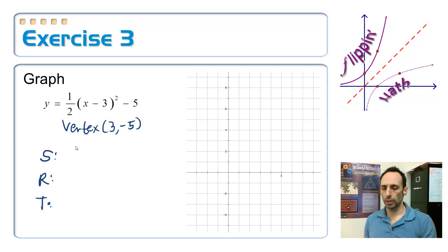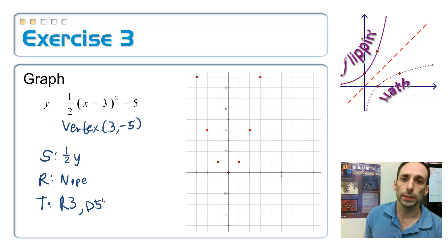Our first graphing one is y equals 1 half times x minus 3 squared minus 5. That's in vertex form. Let's write down the vertex: it's at 3, negative 5. You could plot that if you wanted to. But let's go ahead and do our S, R, and T. Am I scaling it? Certainly, we're scaling it by a half. Are we reflecting it? Nope.